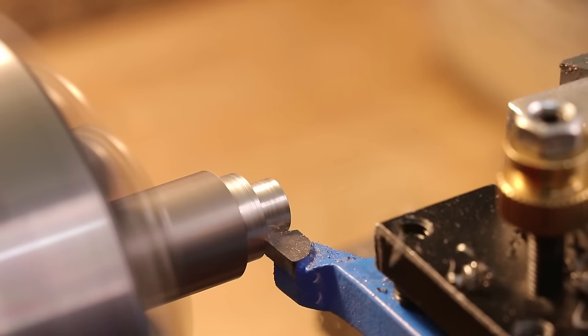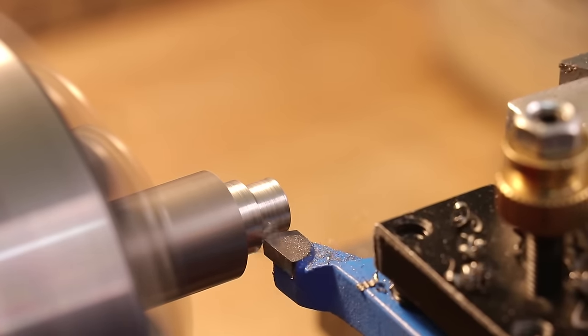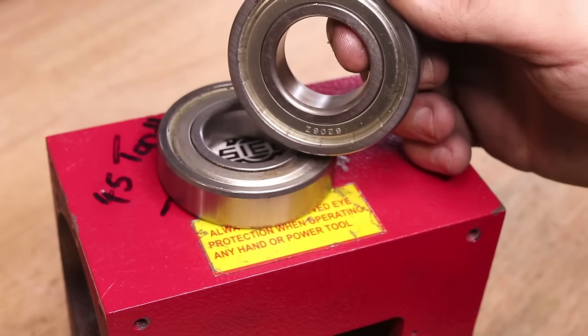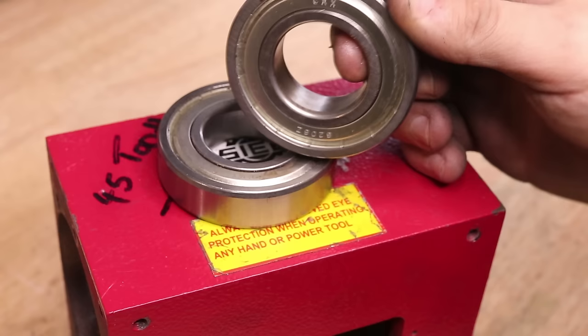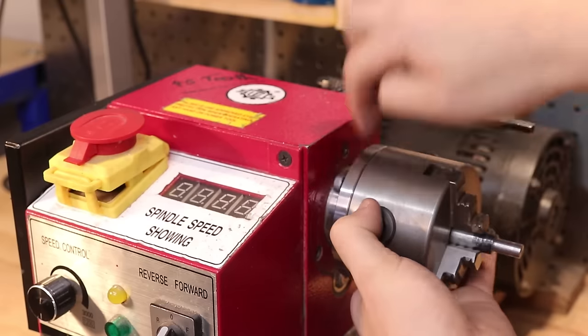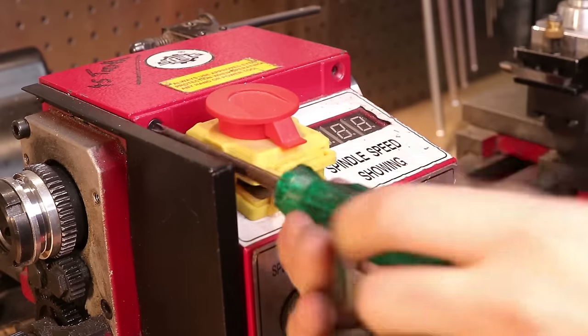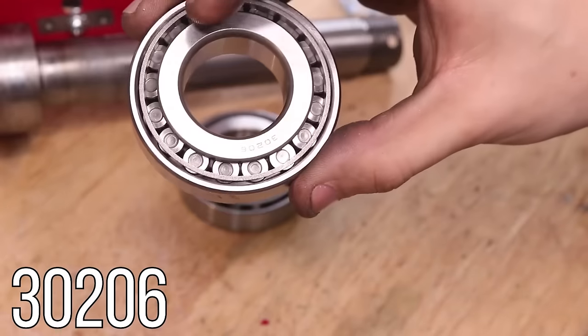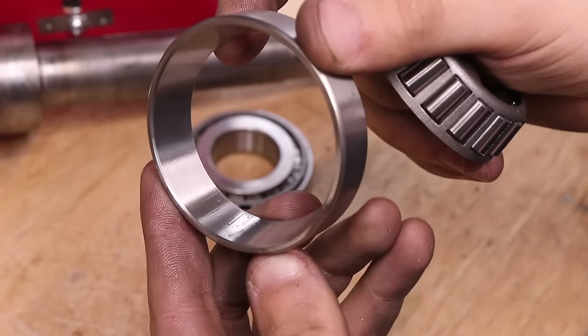The next upgrade I'd recommend would be to change the spindle bearings. From the factory these lathes use plain ball bearings which do not cope well with the axial forces generated by turning. Now I used the stock bearings for two years and by the end it was clear that they were wearing out. There was increased chatter by the end so I had to reduce my depth of cut. I replaced the bearings with 30206 taper roller bearings although you can also use 7206 angular contact bearings.